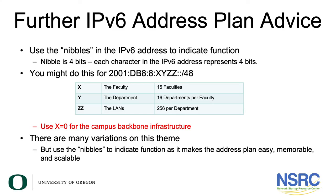When using an IPv6 address plan it's much easier because we use nibbles in the IPv6 address to indicate function. Remember, a nibble is four bits, so each character in an IPv6 address represents four bits. For example, with 2001:DB8:8:XY ZZ::/48, X can represent the faculty (giving 15 faculties), Y the department (16 departments per faculty), and ZZ the LAN (256 per department), with X=0 reserved for campus backbone infrastructure. There are many other variations, but using nibbles to indicate function makes address planning much easier.